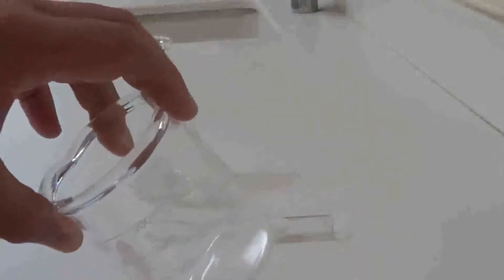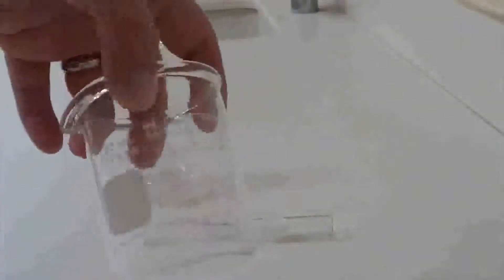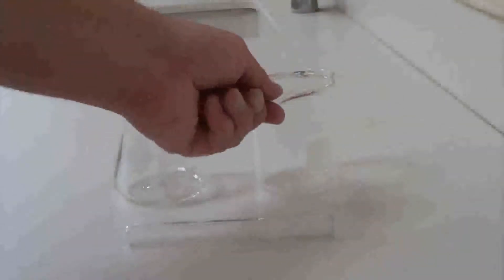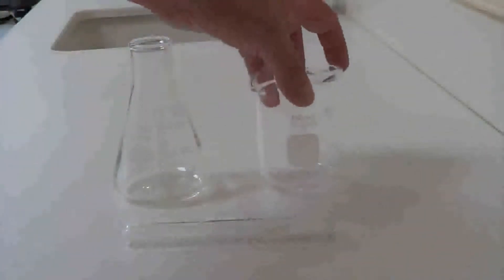This one is called a beaker. It almost looks like a glass that you would drink out of. Don't drink out of these, ever. But it has this nice piece where you can pour a liquid out. Beakers are very handy. We'll use them for all kinds of stuff. Notice that this is not as good as the Erlenmeyer flask for mixing something because there's a big area at the top where it could spill out.